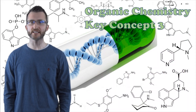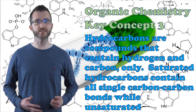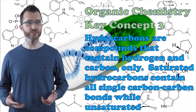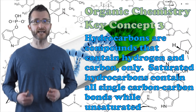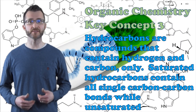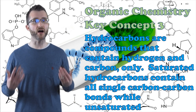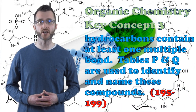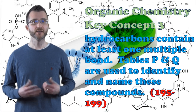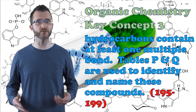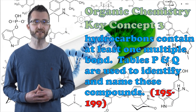Organic chemistry key concept three. Hydrocarbons are compounds that contain hydrogen and carbon only. Saturated hydrocarbons contain all single carbon-carbon bonds, while unsaturated hydrocarbons contain at least one multiple bond. Tables P and Q are used to identify and name these compounds.